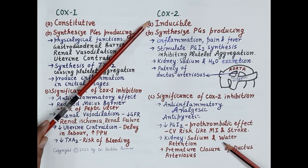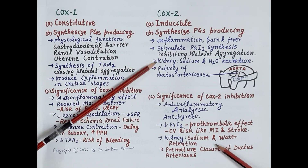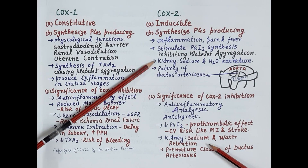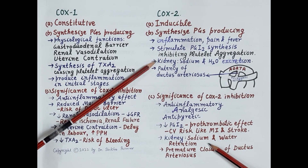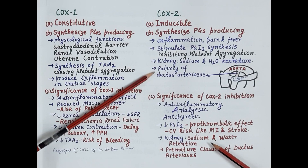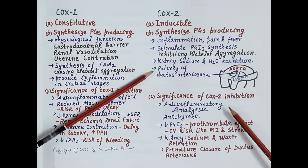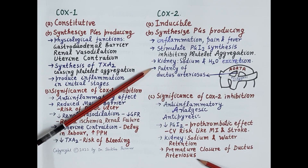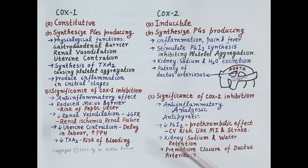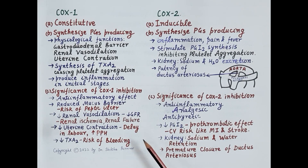Blockage of COX-2 also causes sodium and water retention, which increases water retention and can cause a rise in blood pressure. Furthermore, if NSAIDs are given to a pregnant woman and COX-2 is blocked, there can be premature closure of the ductus arteriosus, which is fatal for the fetus.